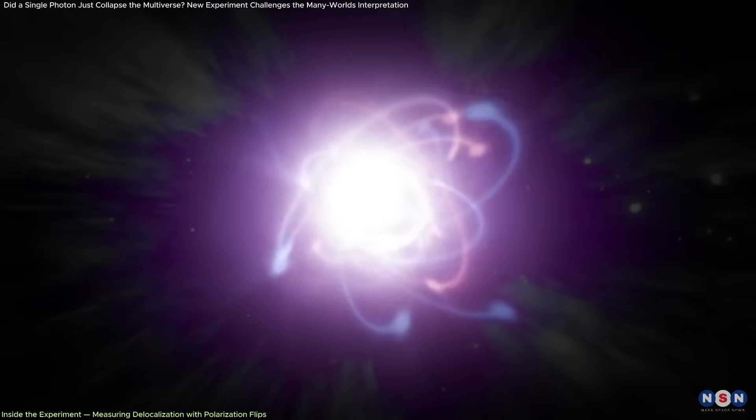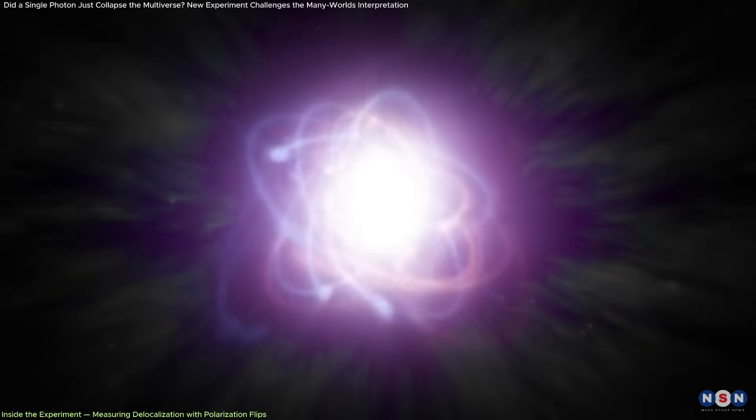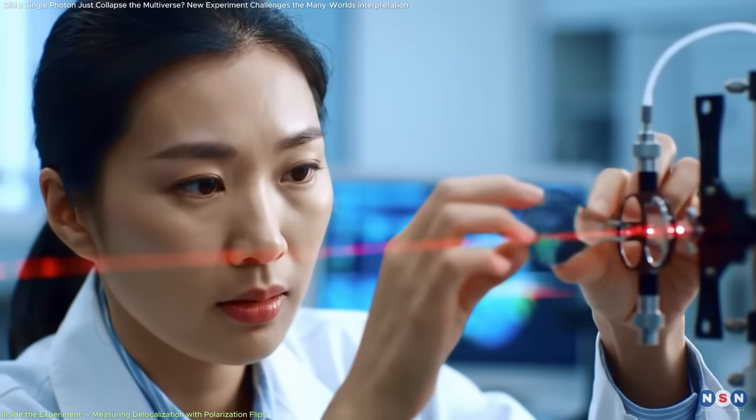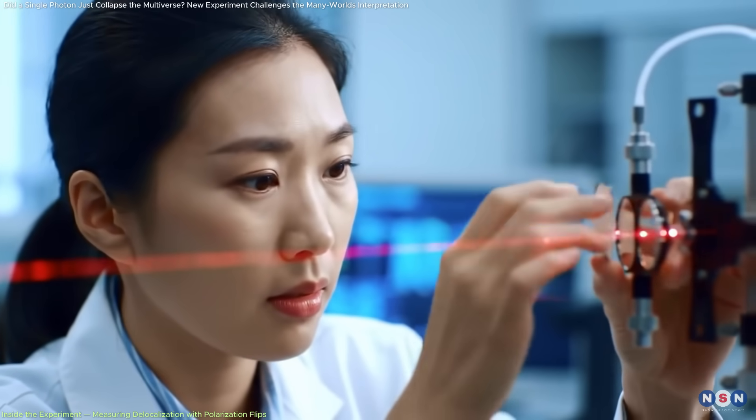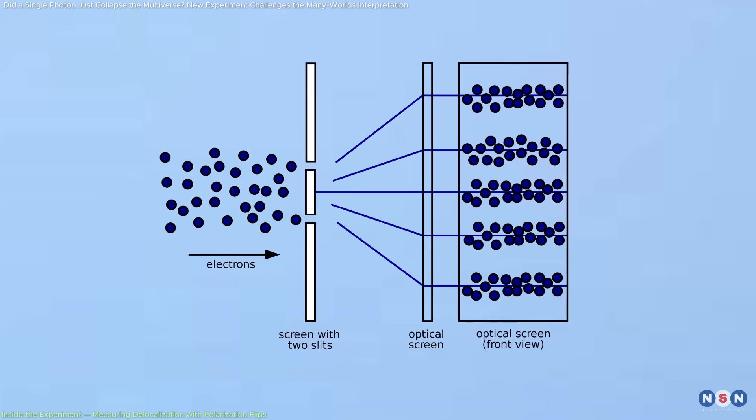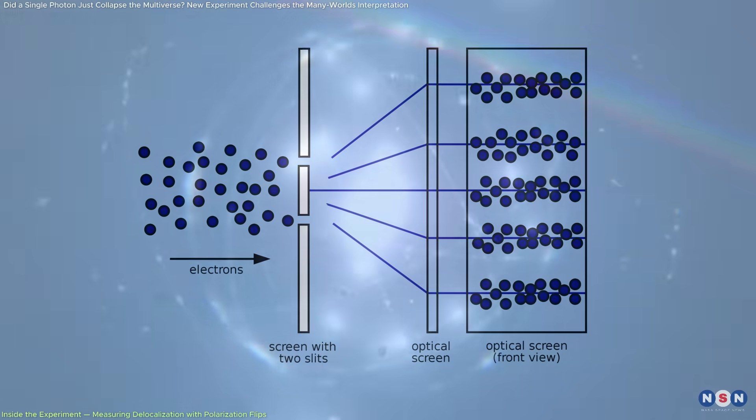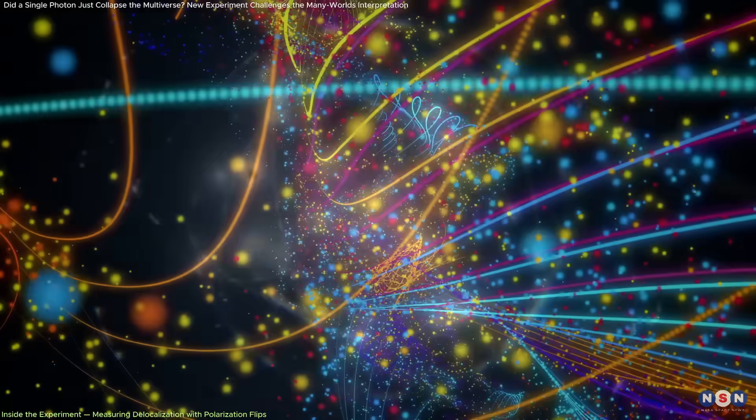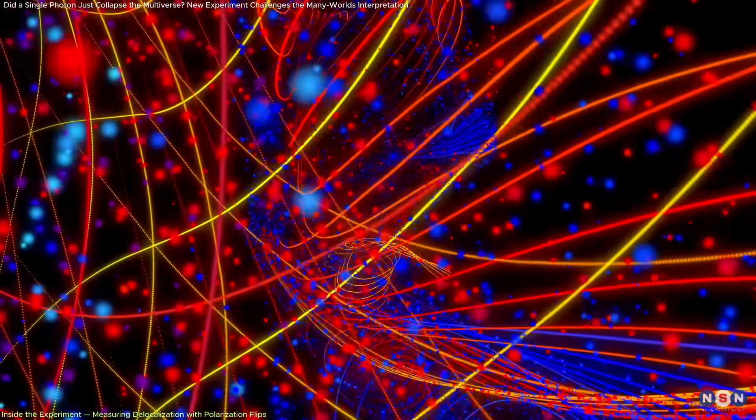The data revealed not only that the photon could be delocalized, but that its behavior could vary drastically depending on the interference conditions at detection. This method avoided any direct which path measurement that would destroy the interference. Instead, it allowed the researchers to infer the photon's behavior based on subtle, non-destructive interactions.